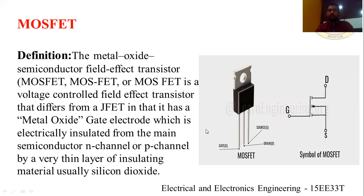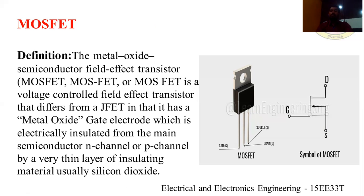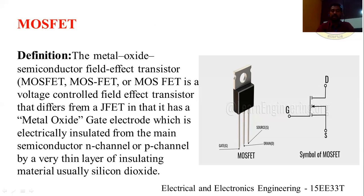Next, coming to MOSFET — metal oxide semiconductor field effect transistor. MOSFET is also a three-terminal device. It is also a voltage-controlled field effect transistor that differs from a JFET in that it has a metal oxide gate electrode.